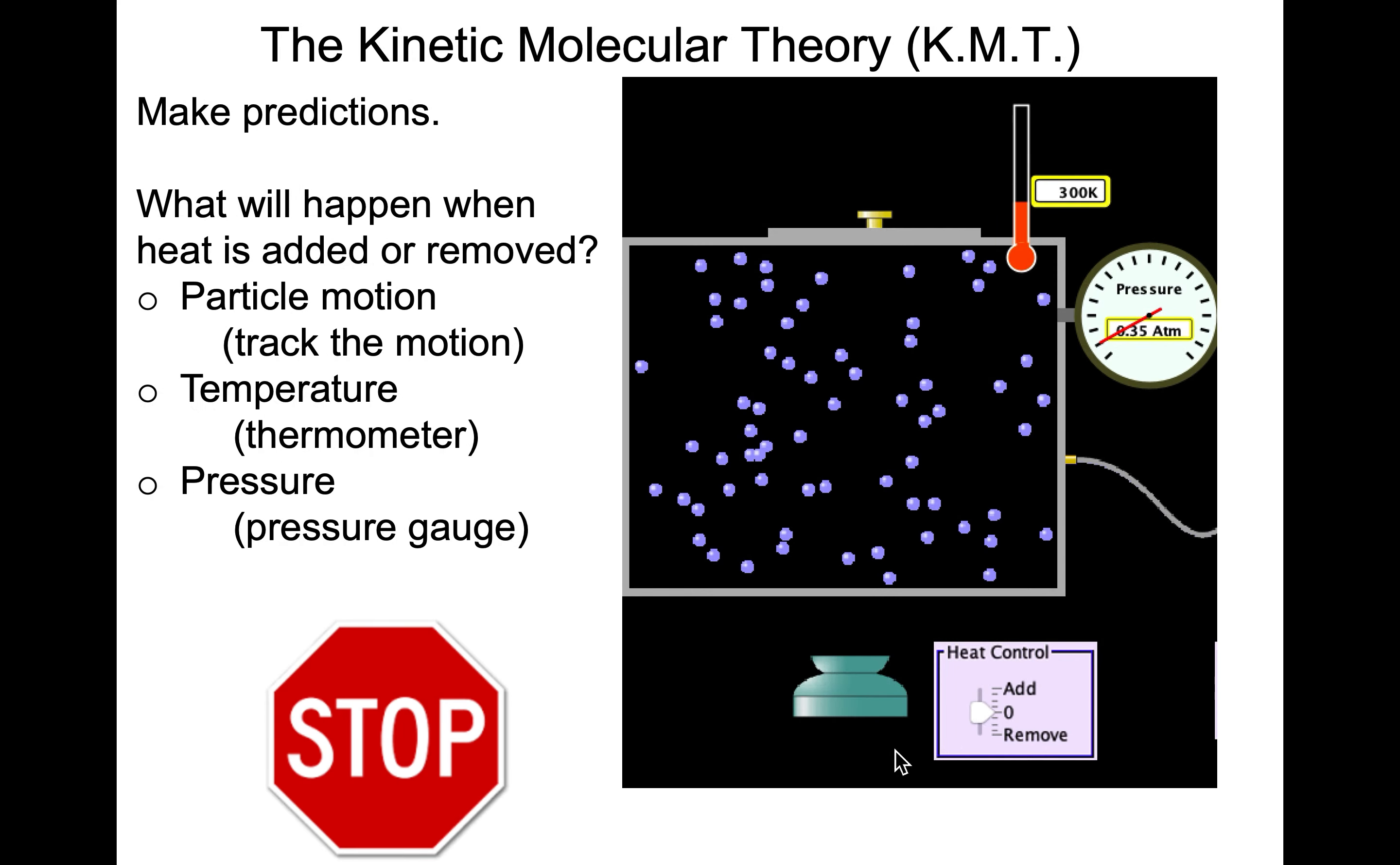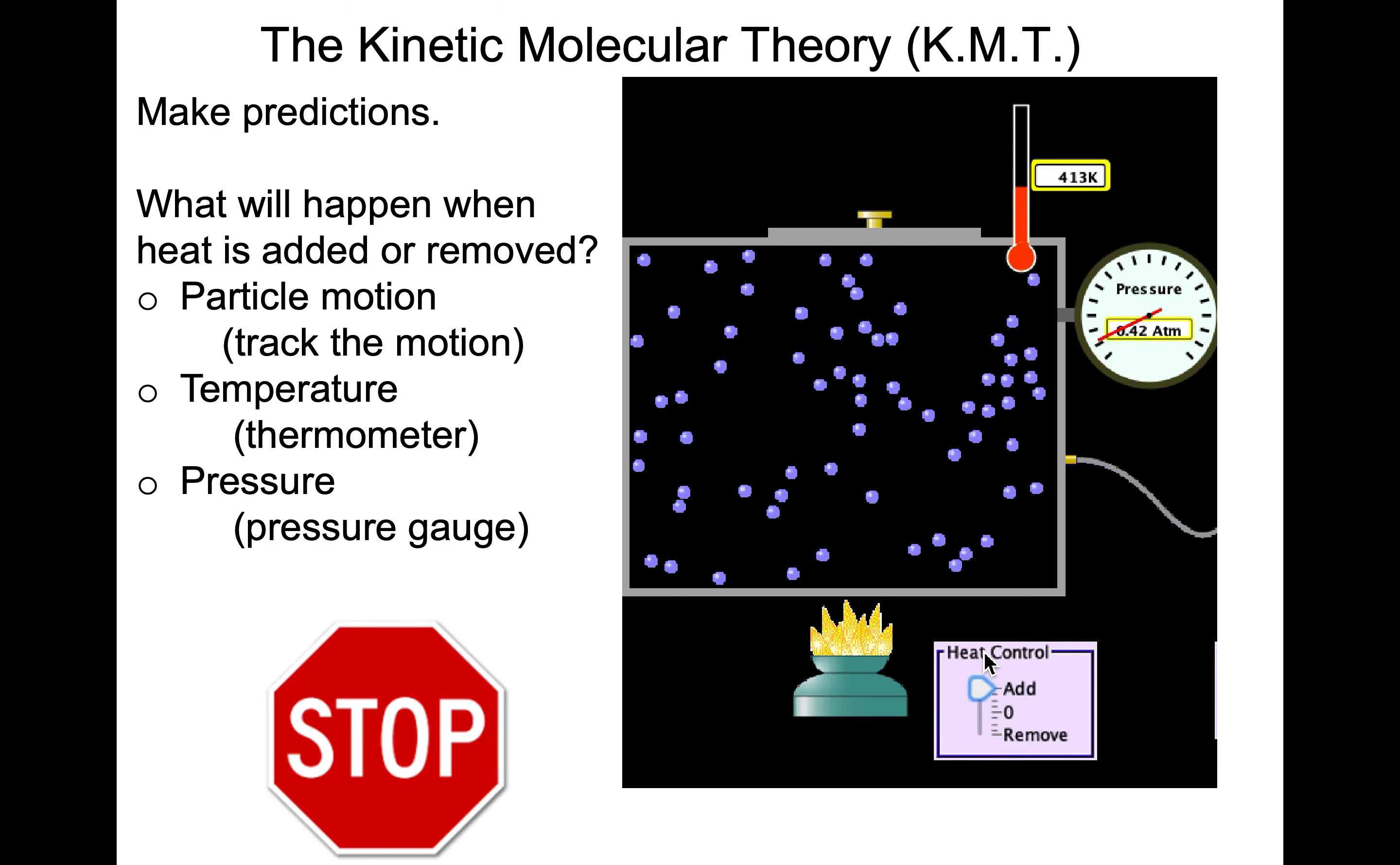Okay, I want you to make some predictions now. What will happen when heat is added or removed in this model? I want you to tell me about the particle motion, what the thermometer would read, and what the pressure gauge would read. We'll explore this within the simulation. But first of all, what are your predictions? When heat is being added or removed, what's going to happen to the particle motion, the temperature, the pressure?